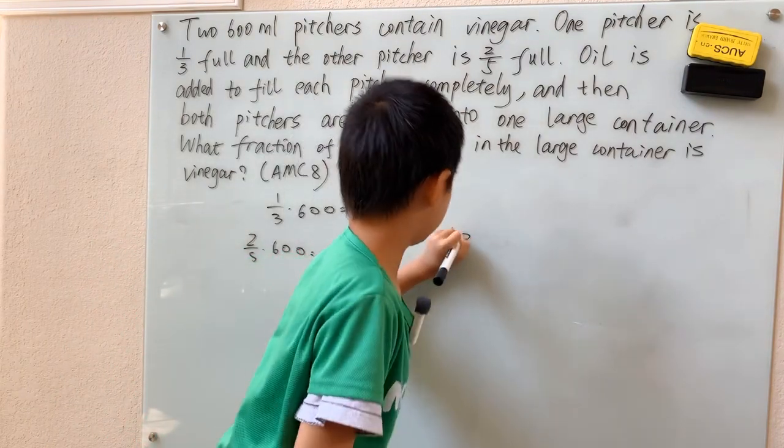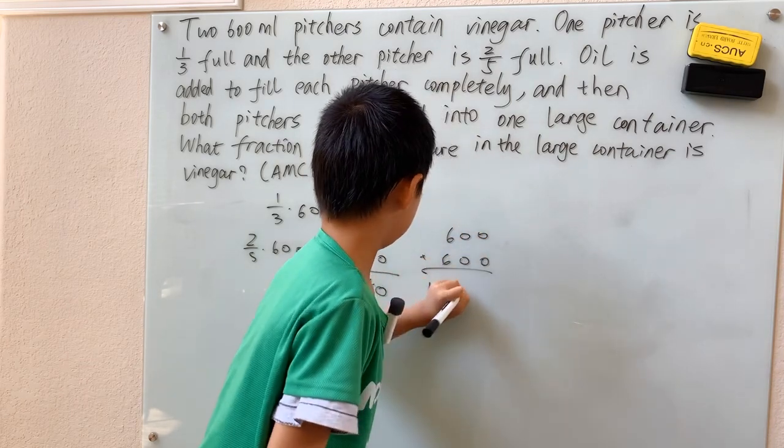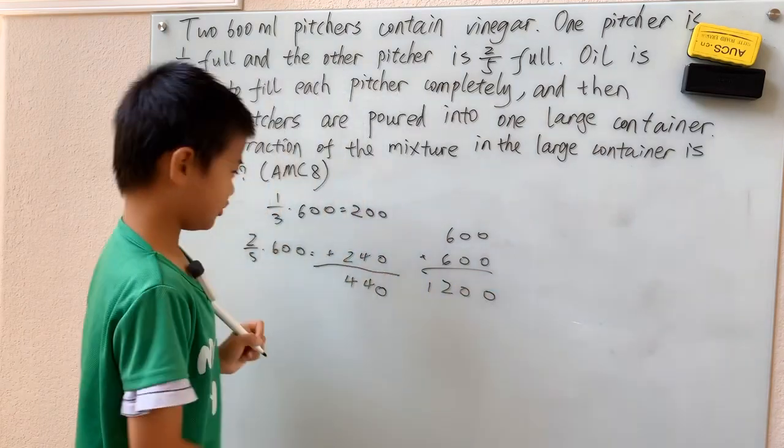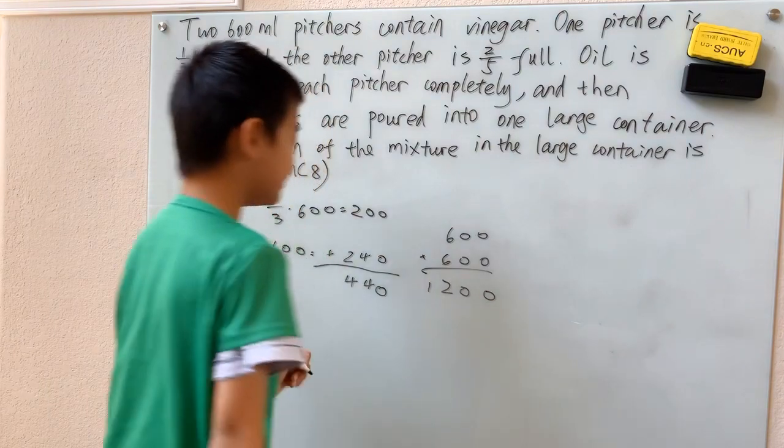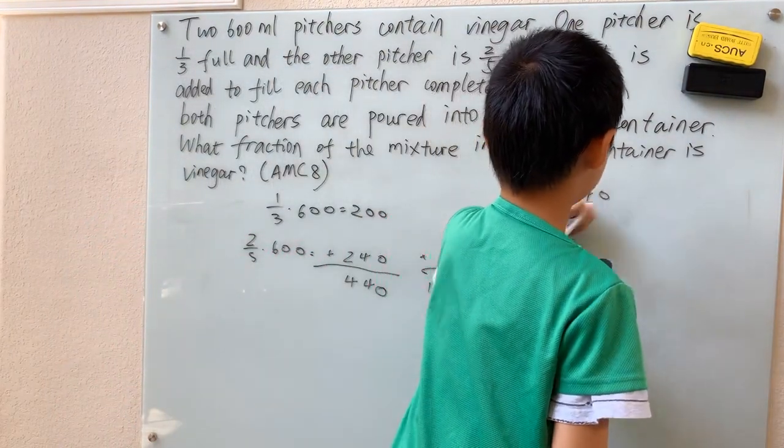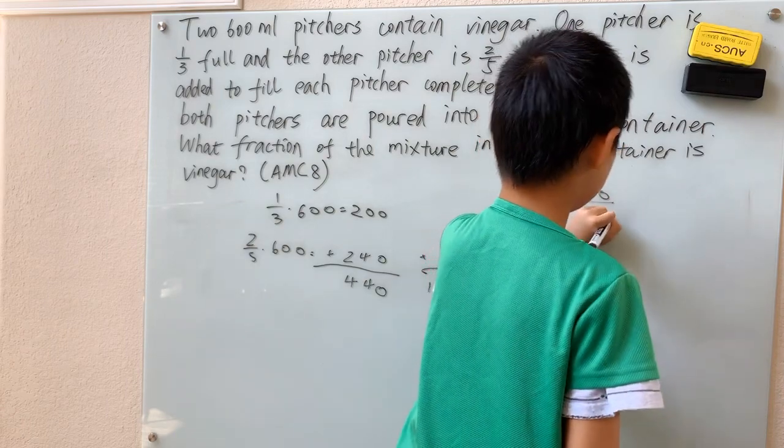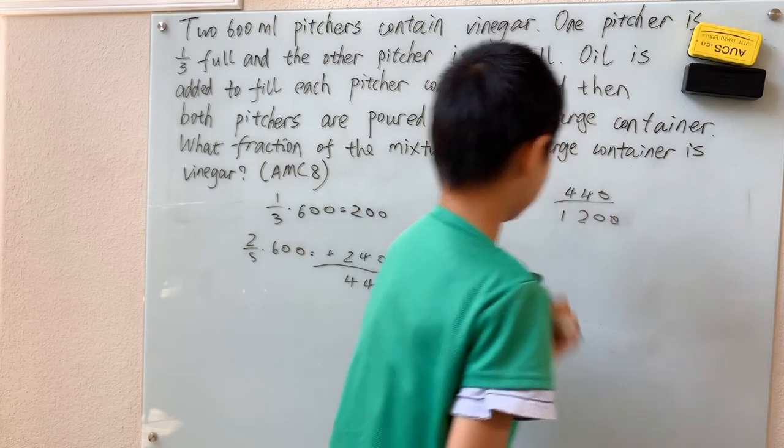1,200. And now since there's 440 milliliters out of the 1,200, we just need to take 440 over 1,200 and simplify that.